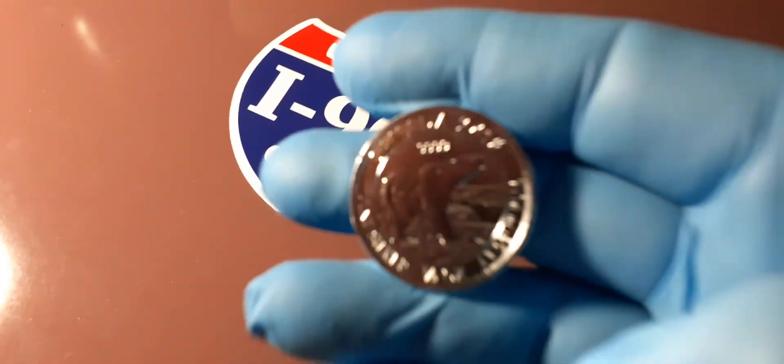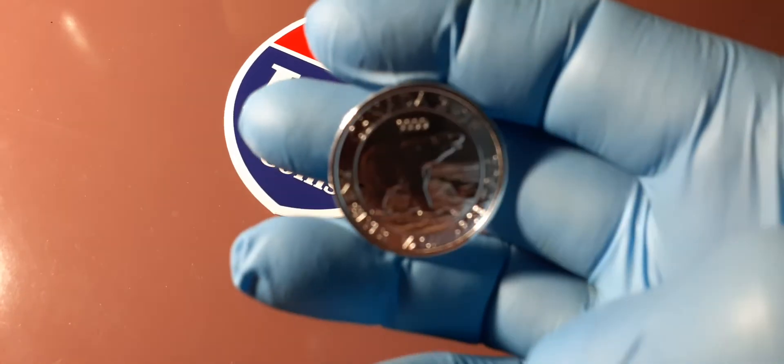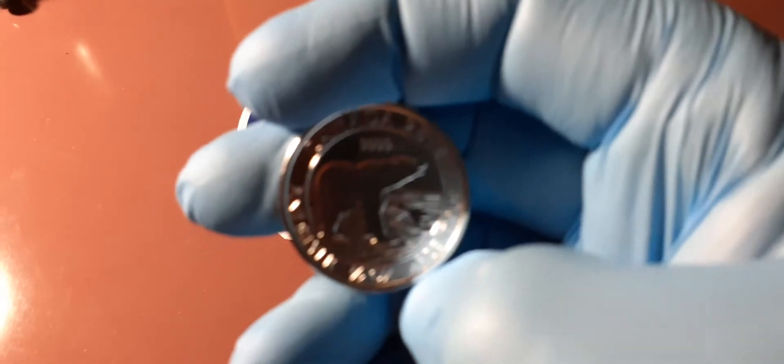It is a gorgeous coin. Let's see if I can get it in focus a little. It's the polar bear, the Canadian polar bear half ounce two dollar coin, absolutely beautiful coin.